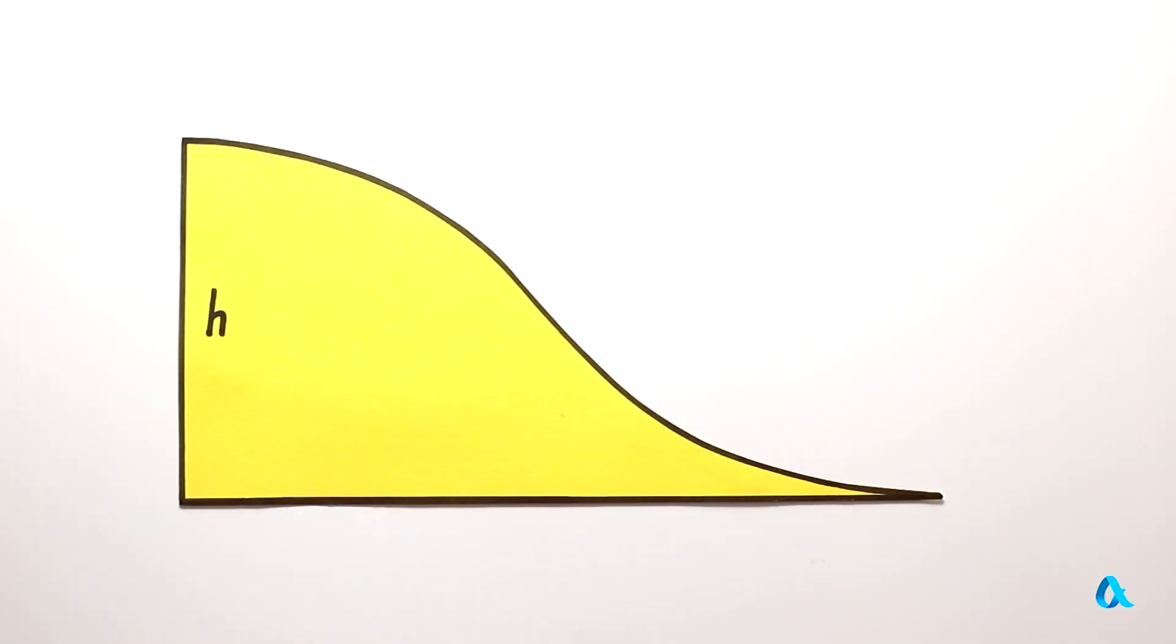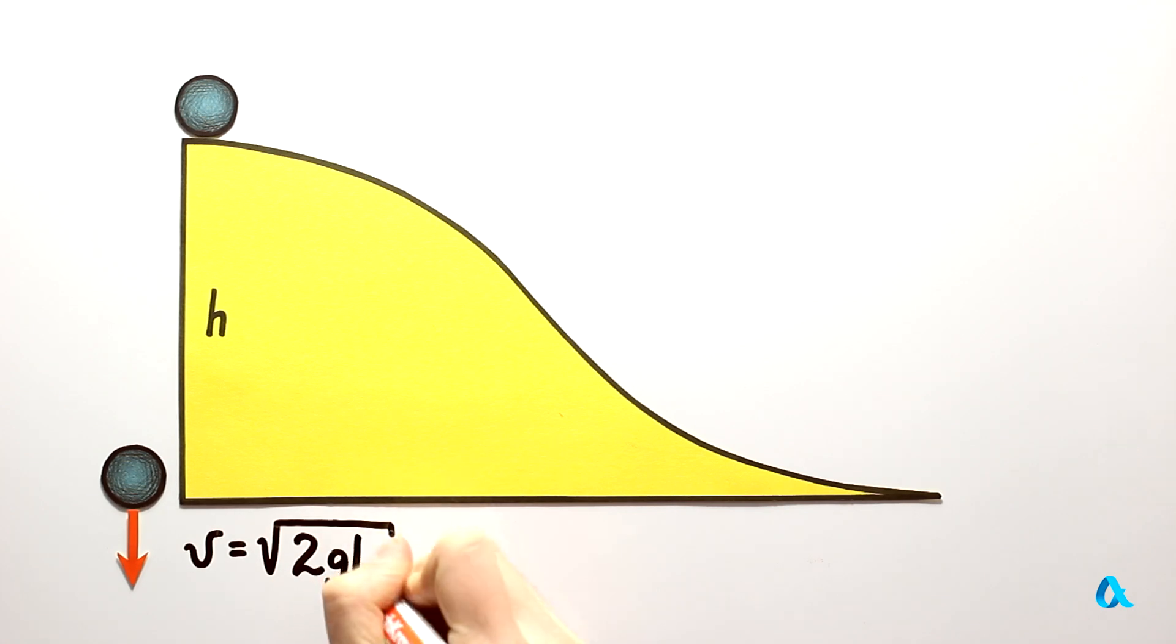But how are the height of the slide and the acquired speed connected? This is how Galileo reasoned. If one of the slides is vertical, then a body free-falling from such height will acquire the speed which equals the square root of 2gh.